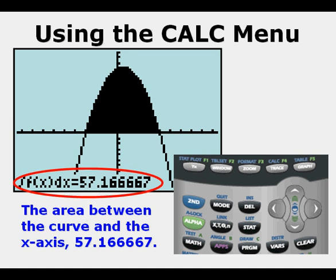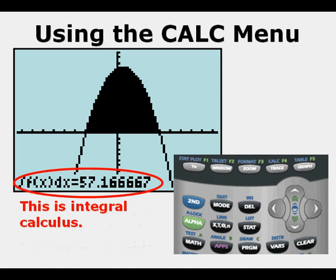This darkened area that we see above the x axis is the area between the curve of the function and the x axis which is 57.166667 square units. This is really 57 and one-sixth units. This operation is integral calculus.